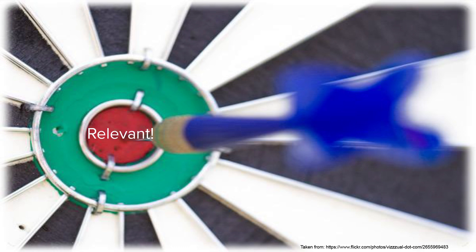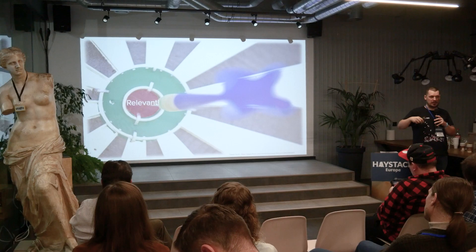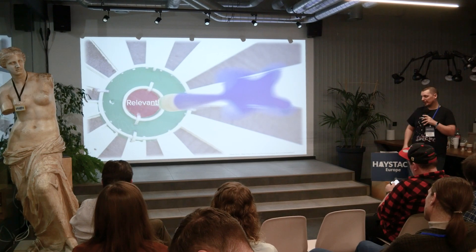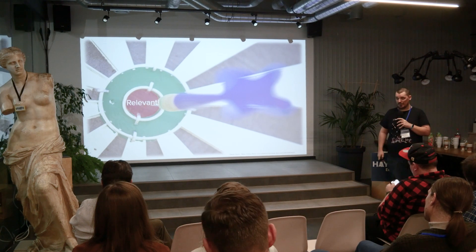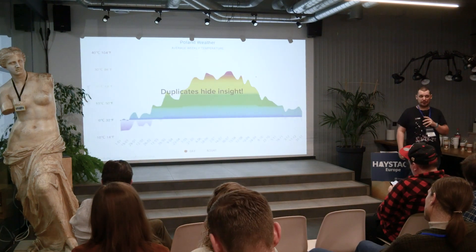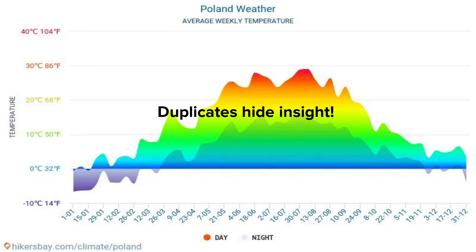Second of all, learners coming to Brainly don't really look for questions, they look for answers. So the relevancy of the answers is what we are striving for. Because we have at maximum two answers per question, we sort of make it difficult to find the right one. The third point, very important for us, is that duplicates tend to hide inside.